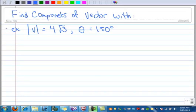In this example we want to find the components. That means find the vector that has some x and some y, if you know the magnitude, in this case it's 4 times the square root of 3, and if you know the direction, in this case it's 150.